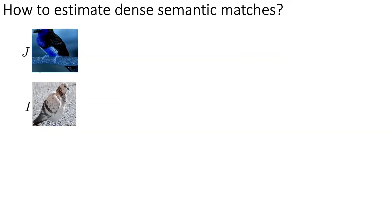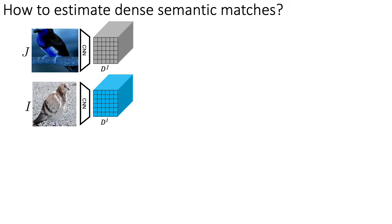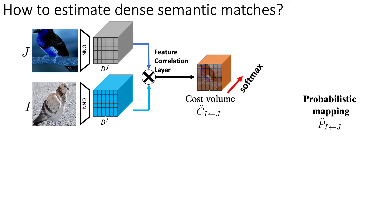So how do we estimate dense matches? In a typical semantic matching architecture, the first step is to extract features from the image patches. These features are then correlated using the feature correlation layer which produces a cost volume. The cost volume is then post-processed and it is finally converted to a probabilistic mapping by simply applying the softmax operation over the channel dimension.